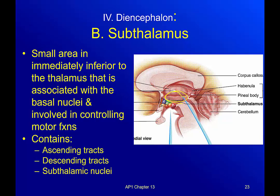Now the subthalamus is located immediately inferior to the thalamus. It's a small area associated with the basal nuclei and controlling motor functions — so this is about movement. It contains ascending and descending tracks, which makes sense since this part connects the top of the brain to the rest of the body. It also has the subthalamic nuclei.